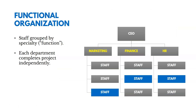In a functional organization, staff is often grouped by specialty or functional area — marketing, finance, HR, and so on. Each department oftentimes completes projects independently. On coordinated projects, the coordination is often done by the functional manager. There's not really a project manager overseeing the work — it's really a coordinating role, not a role where they have management of the resources.